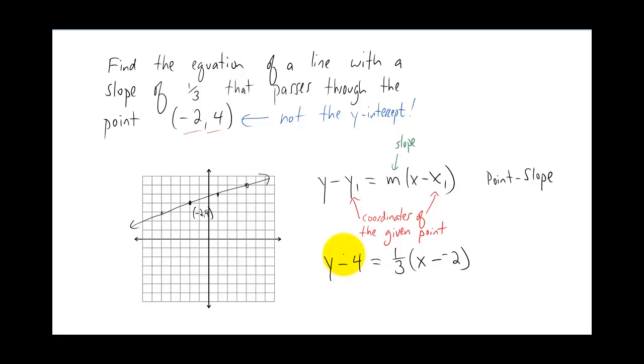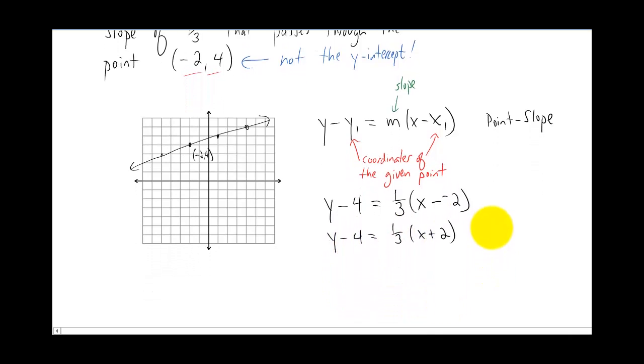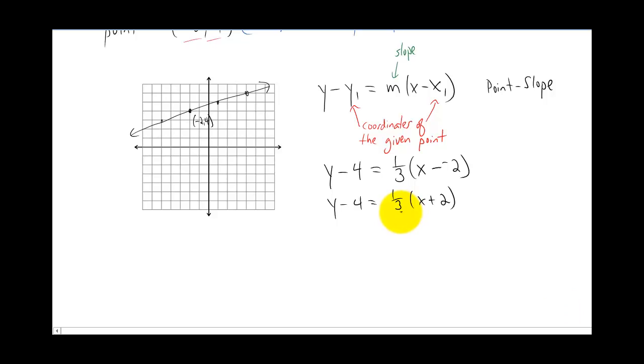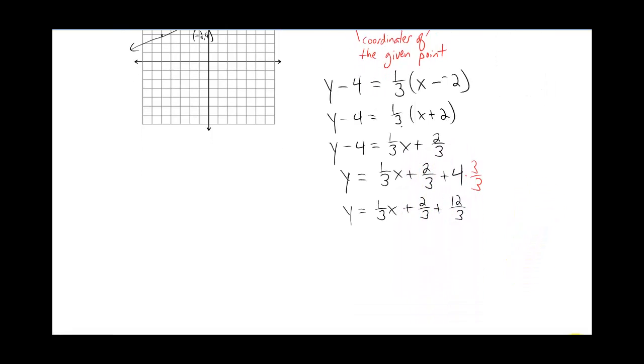Okay so now it comes down to simplification. X minus a negative number is just x plus a number. And what we'd really like to do at this point is we'd like to solve for y. We want to get y by itself because that's the form that we're most comfortable with. So let's do it. I'm going to distribute the one third through the parenthesis here. You'll notice that one third times two is two thirds. Now to get y by itself we just have to add four to both sides. And we'll get an equation that looks something like this. Of course we can combine the two thirds and the four using fractions. We just found a common denominator between the two thirds and the four here. And now we can combine them and then we're finished.